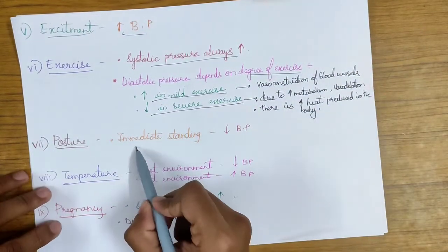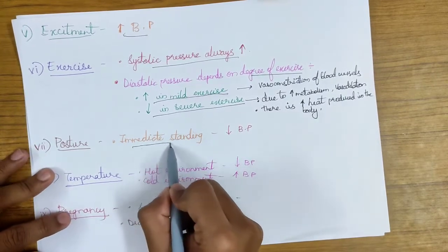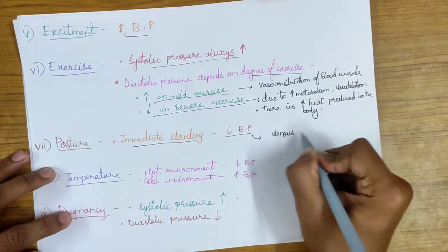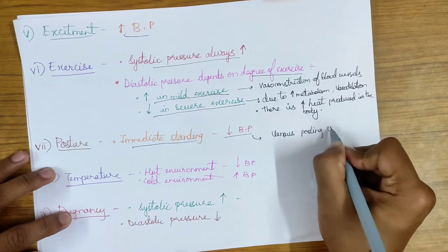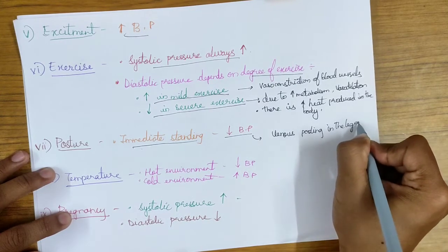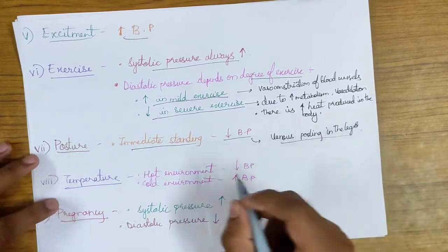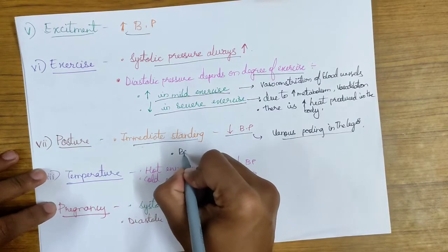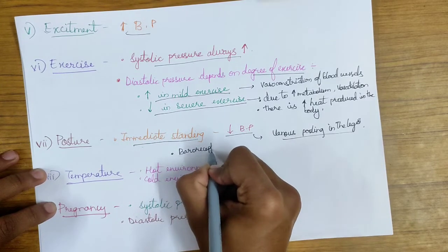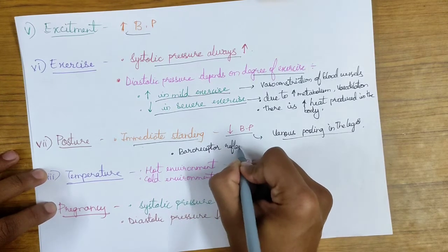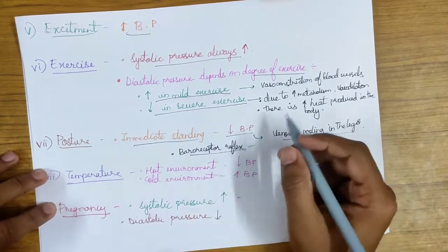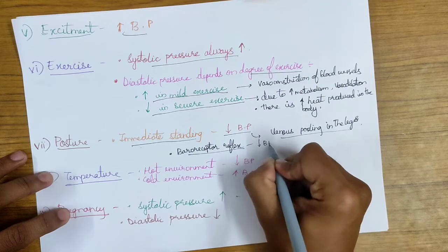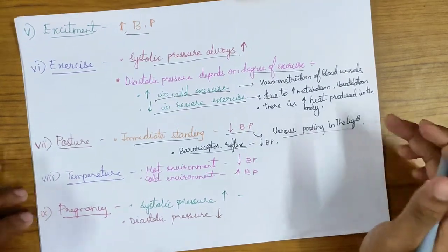The next factor is posture. On immediately standing from a supine position, blood pressure always decreases. This is due to venous pooling in the legs. This is corrected by something called the baroreceptor reflex, which I will discuss in my next video on regulation of blood pressure. The baroreceptors sense this fall in blood pressure and immediately correct it.